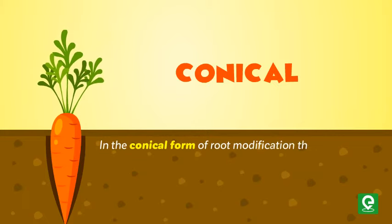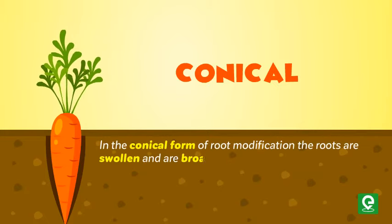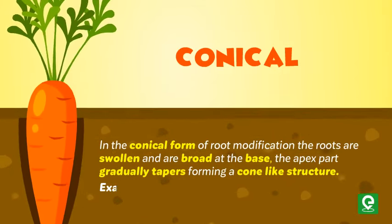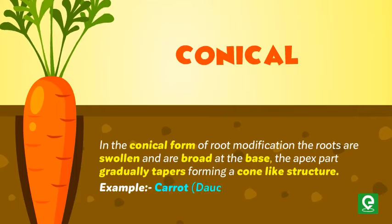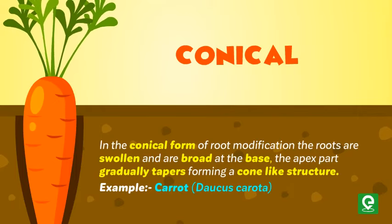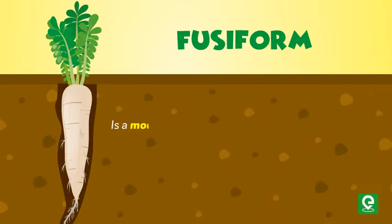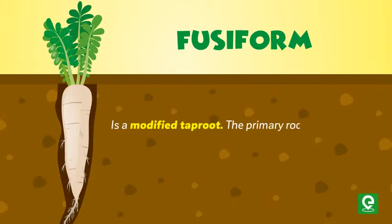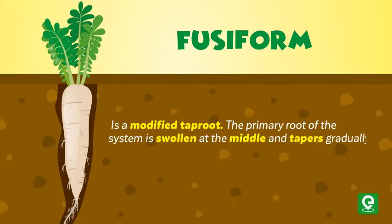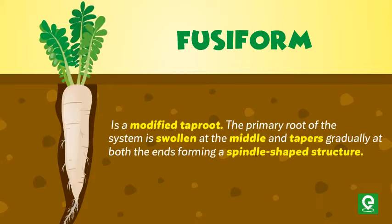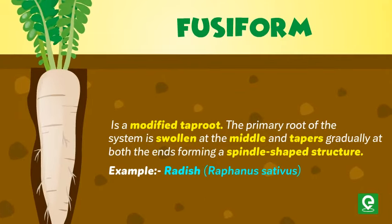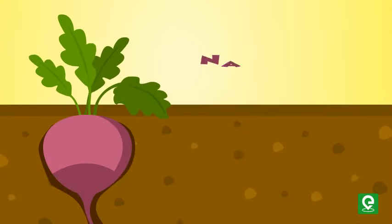Example of moniliform: sweet potato, Ipomoea batatas. Conical: in the conical form of root modification, the roots are swollen and broad at the base; the apex part gradually tapers, forming a cone-like structure. Example: carrot, Daucus carota. Fusiform is a modified taproot where the primary root is swollen at the middle and tapers gradually at both ends, forming a spindle-shaped structure. Example: radish, Raphanus sativus.